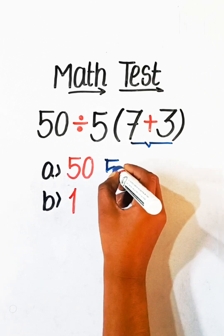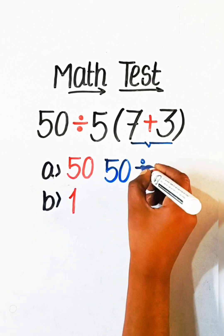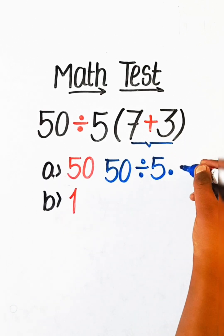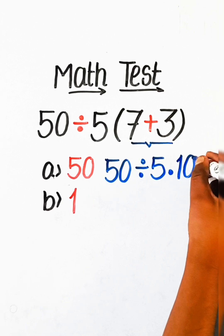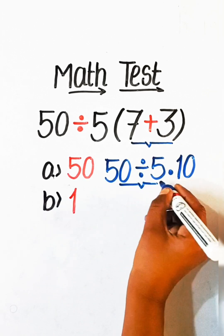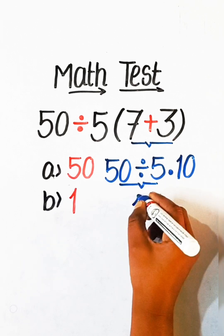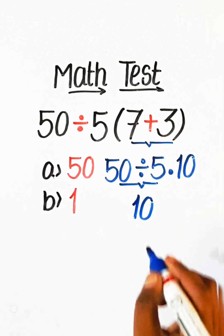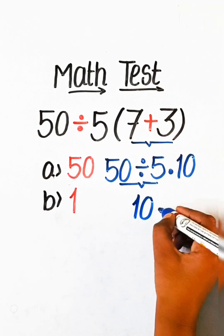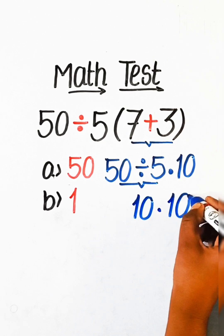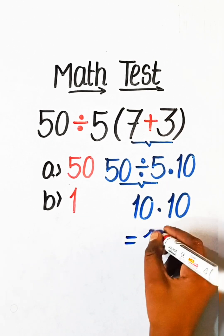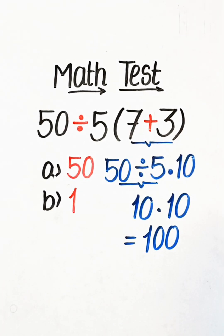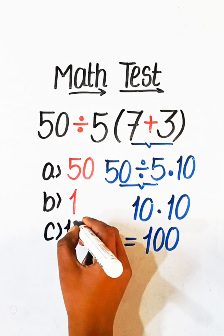First we have to solve the bracket part, so we write 50 divided by 5, multiplied by 7 plus 3, which is 10. Then 50 divided by 5 is 10, and 10 multiplied by 10 equals 100. So the answer is Option C: 100.